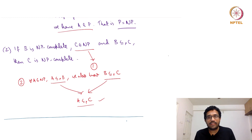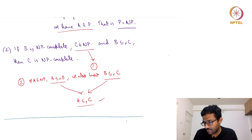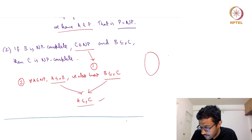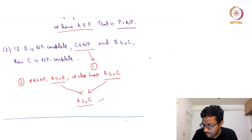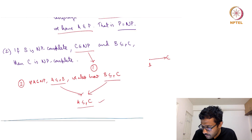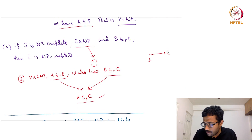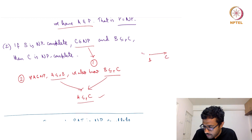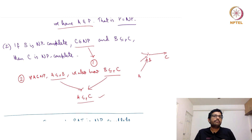So: B is NP-complete, B reduces to C where C is in NP, implies that C is also NP-complete. B is NP-complete and B is reducible to C. But we already know that all the other languages in NP reduce to B. So by transitivity of reductions — A reduces to B, B reduces to C — it follows that A reduces to C.